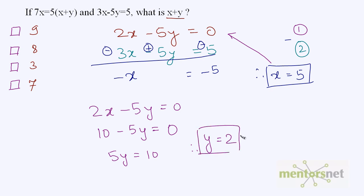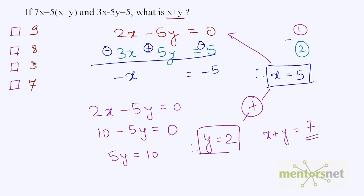5 times 2 is 10, confirming y equals 2. You have been asked x plus y, so 5 plus 2 is equal to 7. Therefore, x plus y is equal to 7.